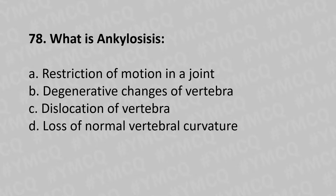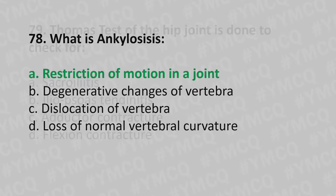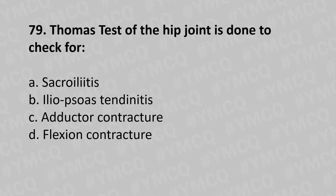option B degenerative changes of the vertebra, option C dislocation of the vertebra, option D loss of normal vertebral curvature. The answer is option A, restriction of motion in a joint. Moving to our 79th question: Thomas test of the hip joint is done to check for option A sacroiliitis, option B iliopsoas tendonitis, option C adductor contracture, option D flexion contracture.